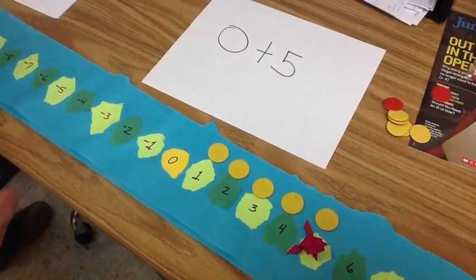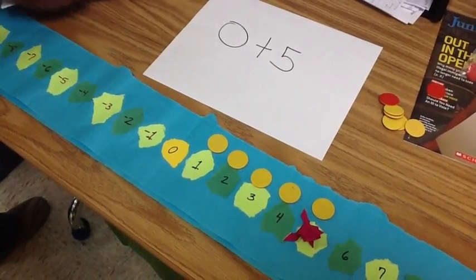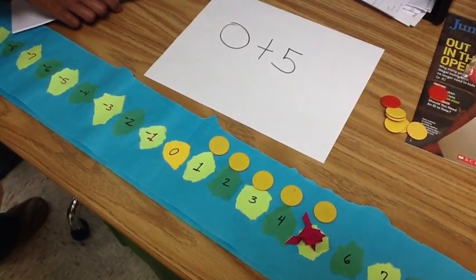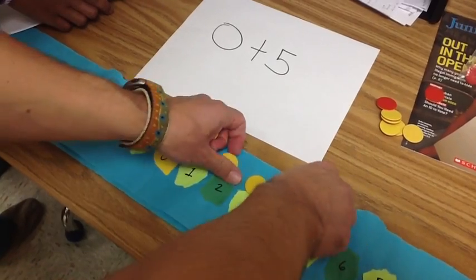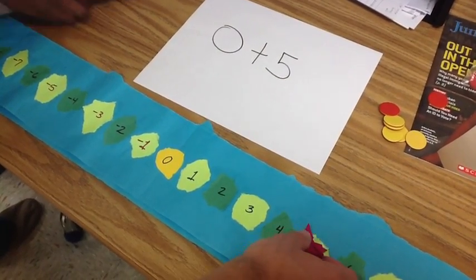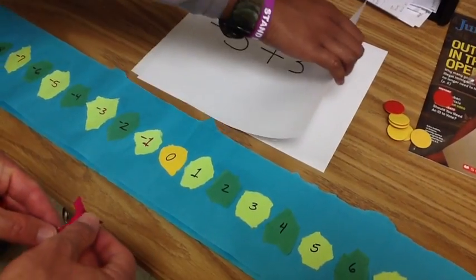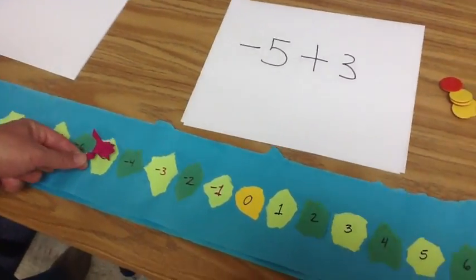Let's try one where we have a negative integer for the second number. Let's do negative five plus three. We can start with the negative number. So the first number tells us what? Where to start. Exactly. So we're going to go down to negative five.